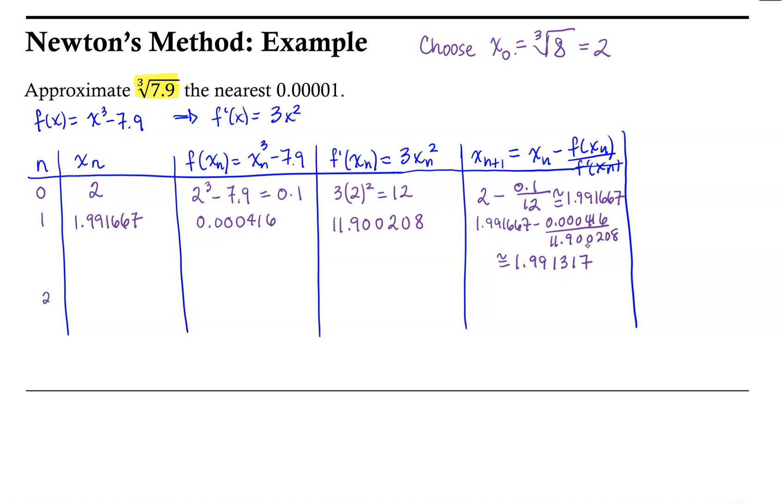We just found our second approximation via Newton's method, and that was 1.991317. So now we need to evaluate our function at that value for x and our derivative. So our function at 1.991317 is negative 0.003744. And then our derivative would be 11.896030.